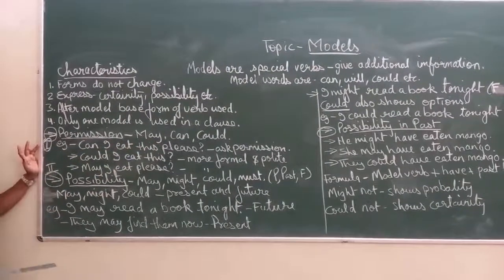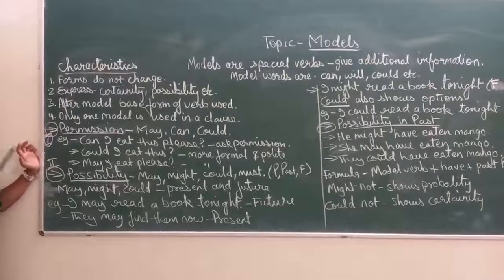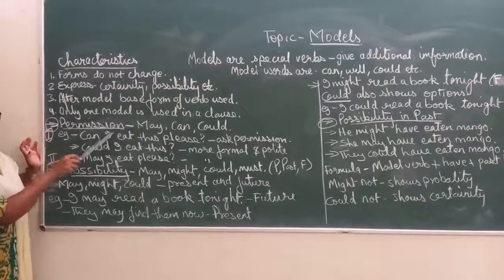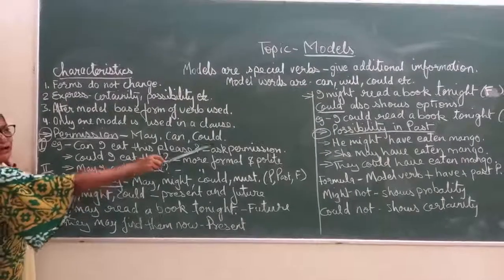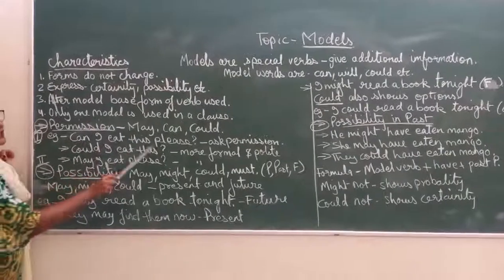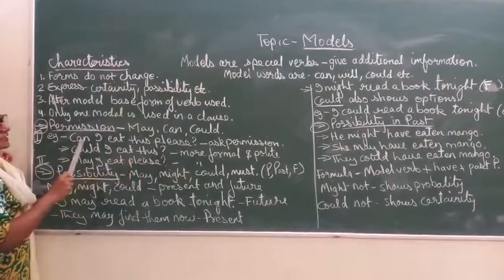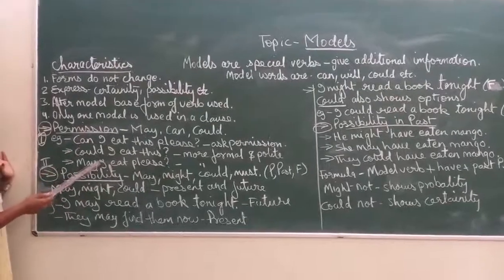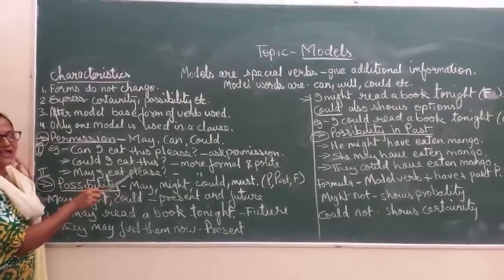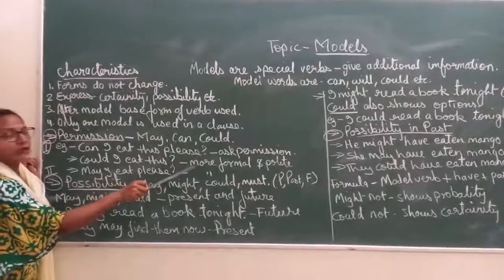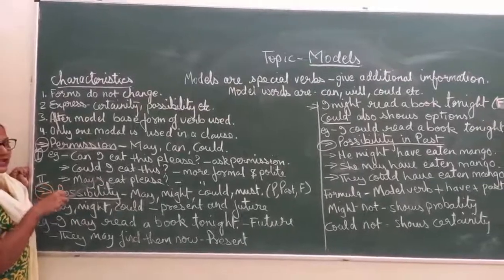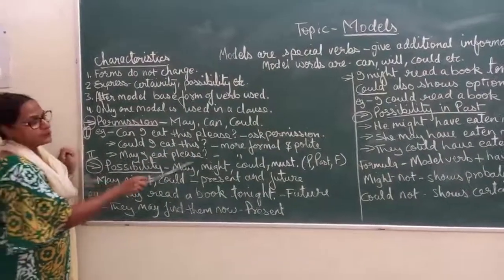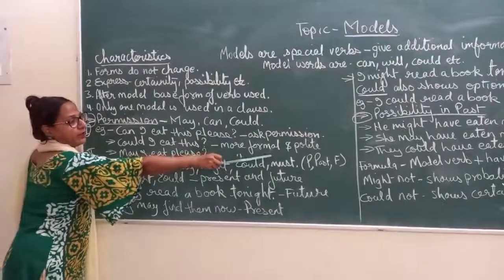There are certain uses of modals. The first is we use modals to take permissions, and the modals we use for permission are may, can, could. For example, 'Can I give this please?' — here can is showing that you are asking permission. 'Could I give this?' — here you are also asking permission but it is more formal and polite than can. Similarly, 'May I teach please?' is also a formal and polite form.